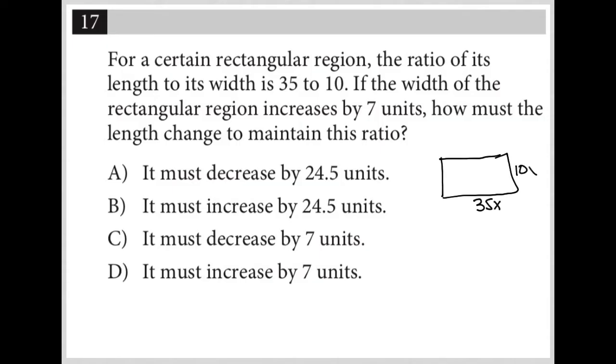Anytime I see the word ratio followed by some actual values, I always include an x because having a ratio of 35 to 10 doesn't mean that the values of the length and width are actually 35 and 10. It just means that once you reduce it, it becomes 35 to 10, which also kind of doesn't make sense because you can reduce even further to like 7 to 2 would be the exact same ratio. But that's neither here nor there.